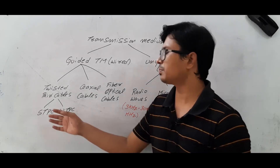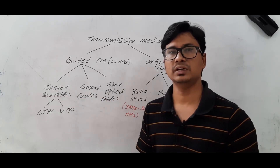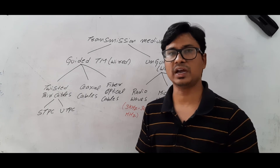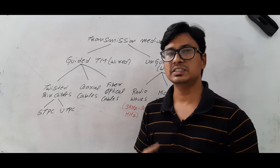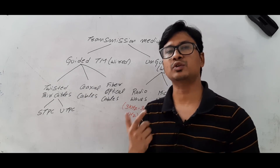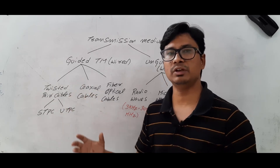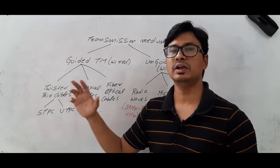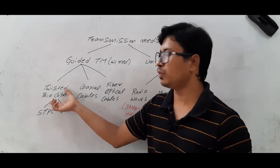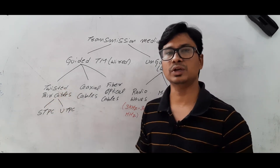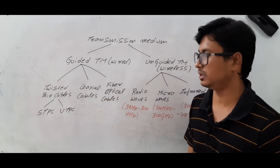Now coming to twisted pair cables — why are they called twisted? The copper wires are twisted to avoid crosstalk and noise. In a twisted pair cable, one copper wire is used for transferring data and the other is used as a ground reference. The shielded variety has a shield to protect from electromagnetic interference. We also have coaxial cables alongside twisted pair cables.